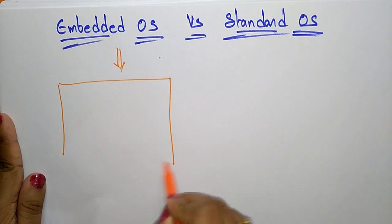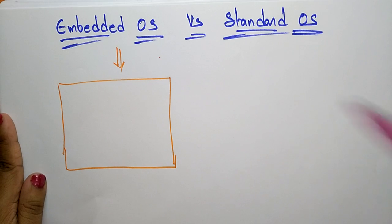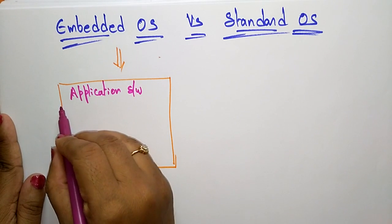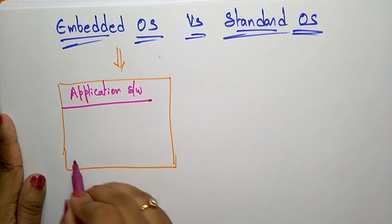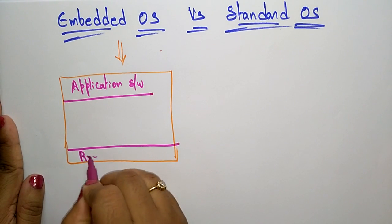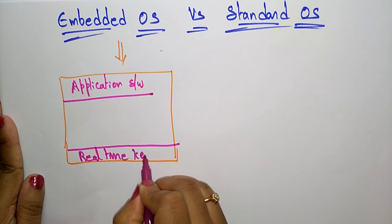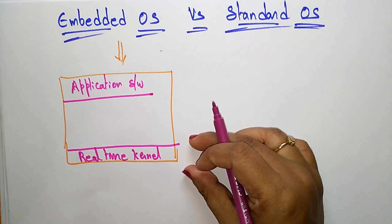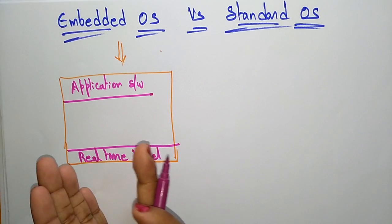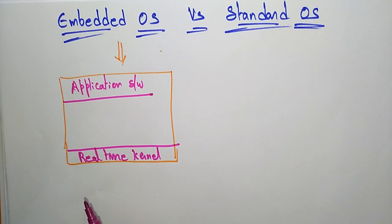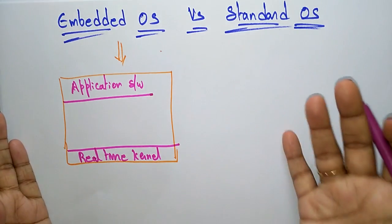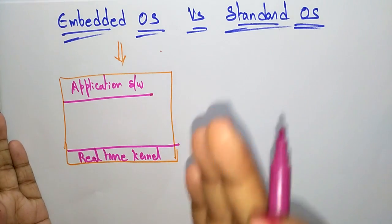Now let's see the comparison between these two. An embedded operating system consists of application software, and importantly, a real-time kernel. We use a real-time kernel in an embedded operating system because it must work on real-time — the kernel supports real-time applications. In a standard operating system, a real-time kernel is not required, but in an embedded operating system it is compulsory.